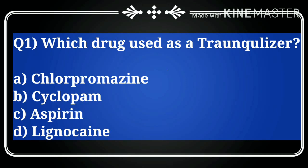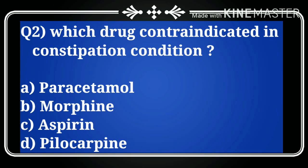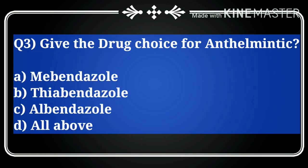Question number two: which drug is contraindicated in constipation? The options are: A) paracetamol, B) morphine, C) aspirin, D) pilocarpine. Our correct answer is B, morphine. Morphine causes constipation, so it is contraindicated in this condition.